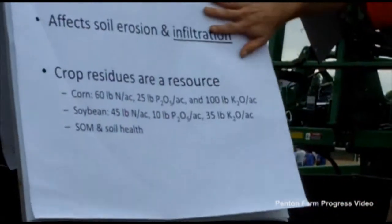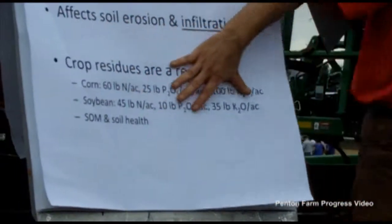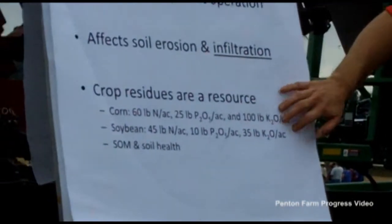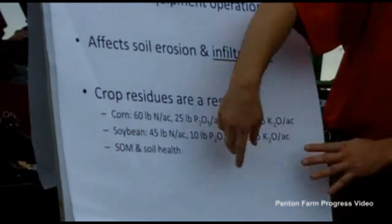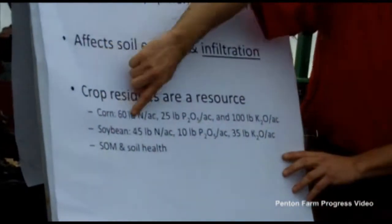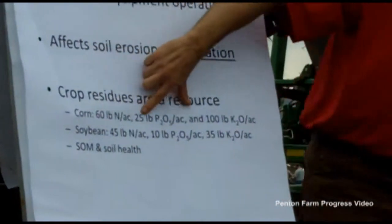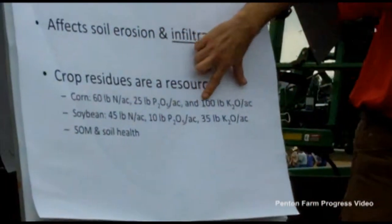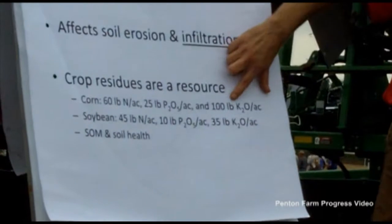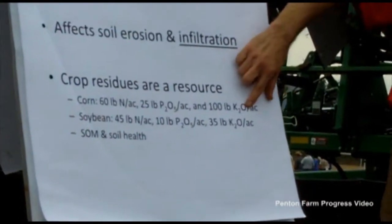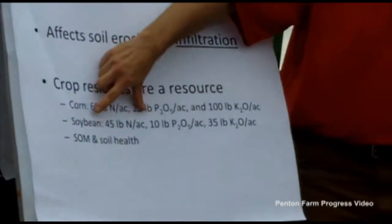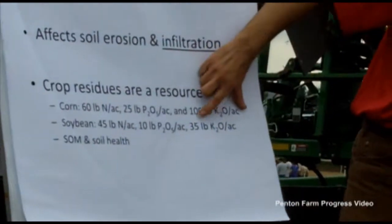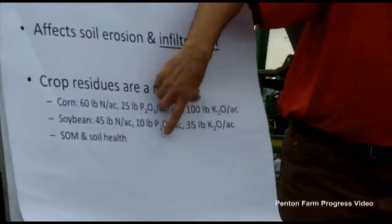One take-home message I want you to have is that crop residues are a resource — they're not trash, they're a resource. An average corn crop has about 60 pounds of nitrogen per acre, about 25 pounds of P2O5, and about 100 pounds per acre of potash. Similarly, soybeans have about 45, 10, and 35 pounds respectively.